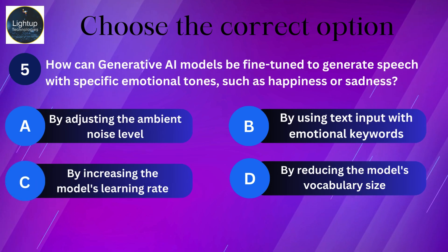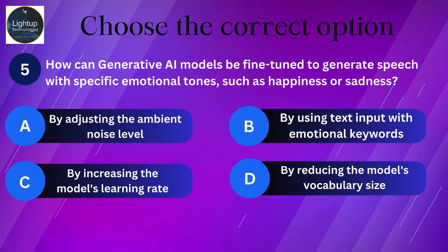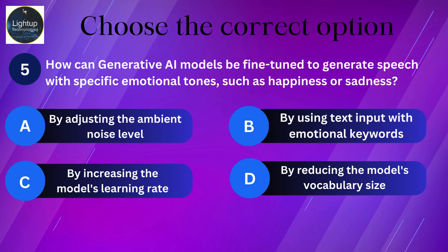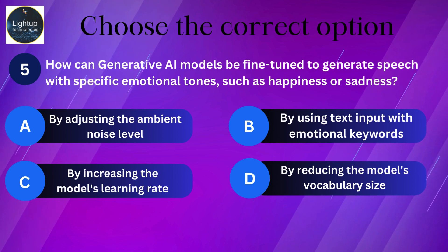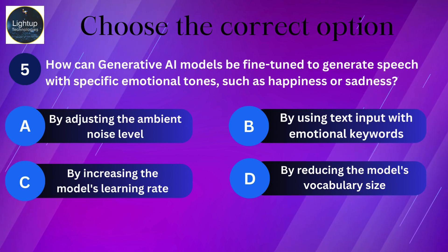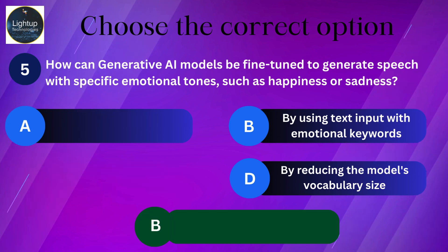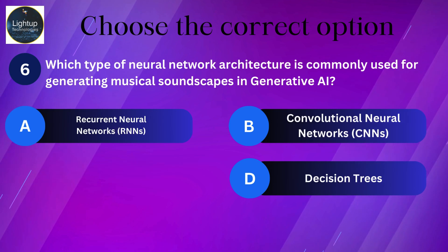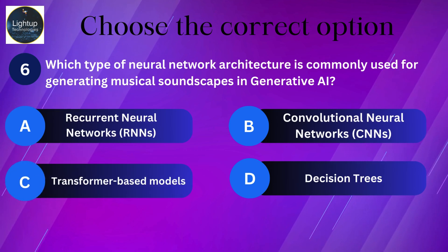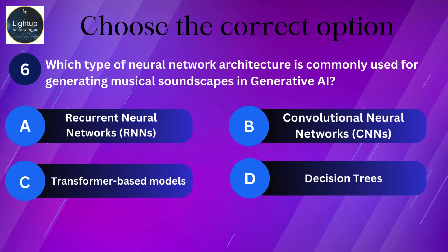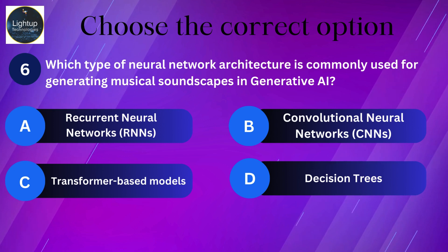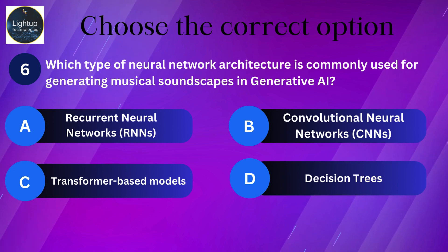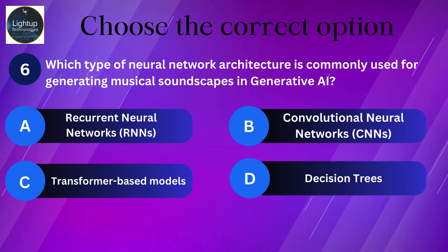How can generative AI models be fine-tuned to generate speech with specific emotional tones such as happiness or sadness? Which type of neural network architecture is commonly used for generating musical soundscapes in generative AI?